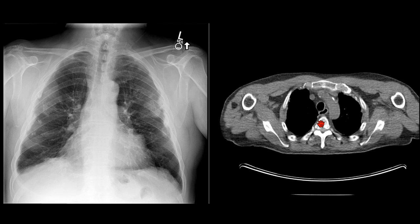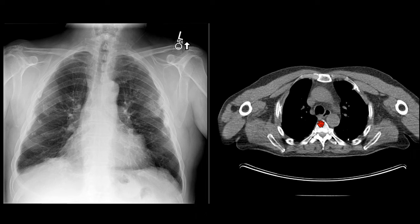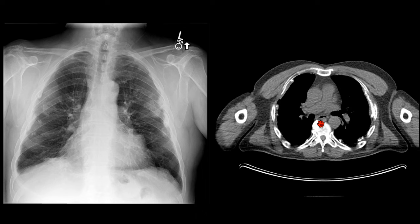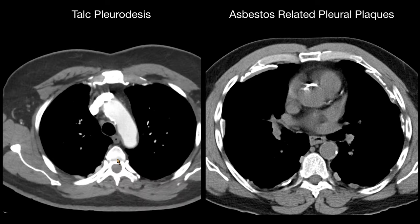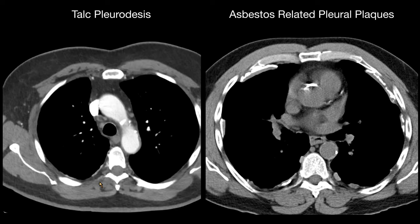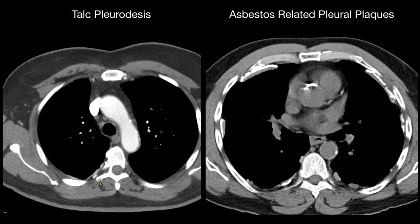Also, most cases are going to have bilateral involvement of the pleura. These lung plaques should be distinguished from talc pleurodesis. This is a patient who had a talc pleurodesis on the right side, and this looks different from asbestos-related pleural disease for a few reasons.